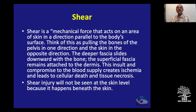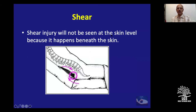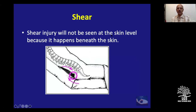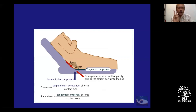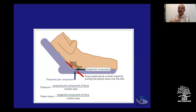Think of pulling the bones of the pelvis in one direction and the skin in the opposite direction. The deeper fascia slides downward with the bone; the superficial fascia remains attached to the dermis. This compromises blood supply, creates ischemia leading to cellular death and tissue necrosis. Shear injury will not be seen at the skin level because it happens underneath the skin — unlike friction, which is visible. There are two main forces: perpendicular pressure and parallel/tangential shear.